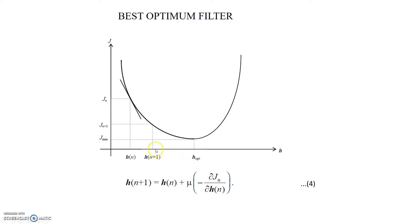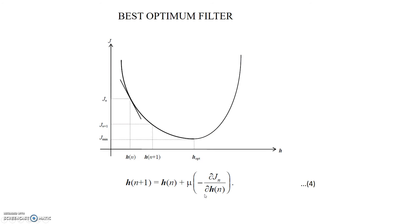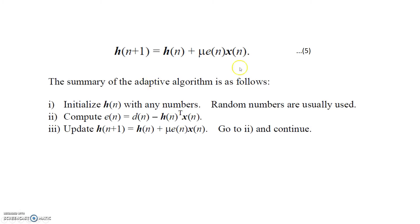In this way we will reach to h optimum, and this equation describes the operation that we need to perform here. Let's substitute the value of this derivative which we have calculated in equation 3, and the final equation will be h(n+1) = h(n) + mu * e(n) * x(n), where mu is the adaptation factor.